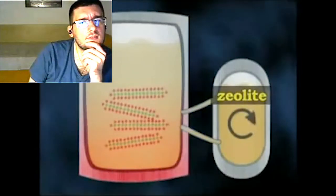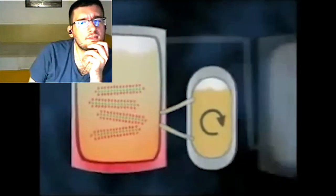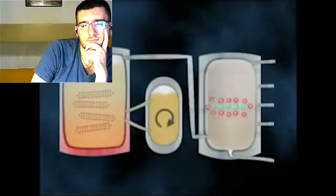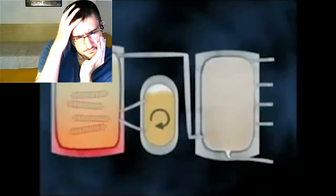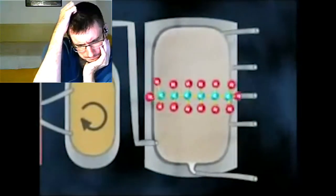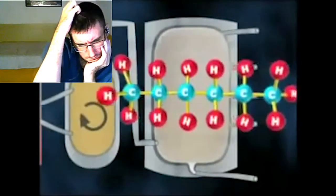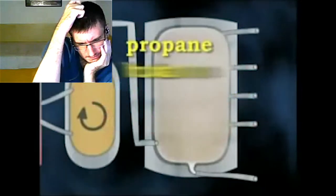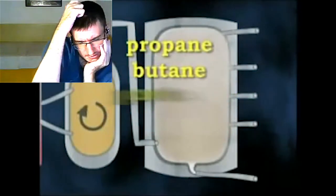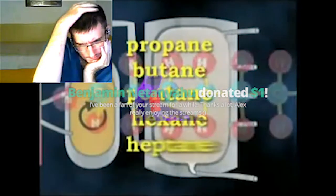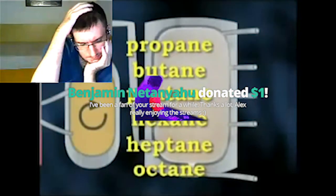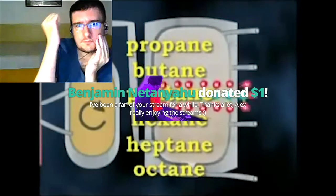Catalytic cracking is the major source of hydrocarbons with 5 to 10 carbon atoms in the chain. The molecules most formed are the smaller alkanes used in petrol, such as propane, butane, pentane, hexane, heptane and octane — the components of liquid petroleum gas.